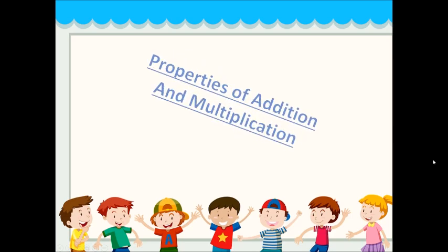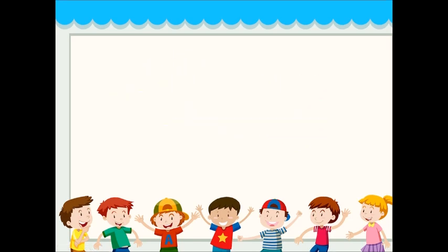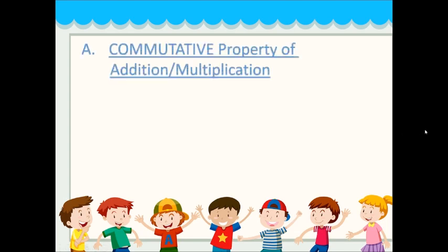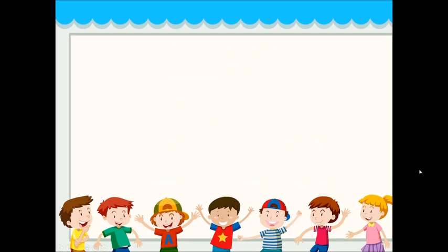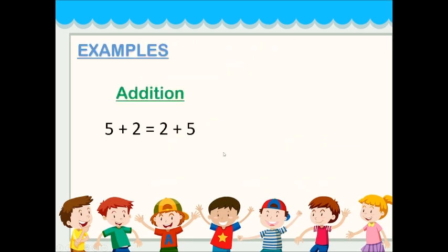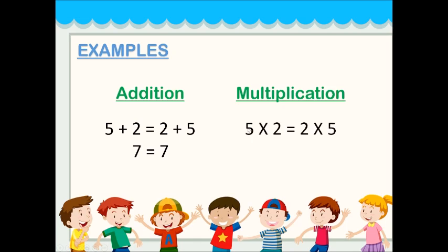Next is the properties of addition and multiplication. First is the commutative property. If A and B are any two whole numbers, then A plus B is equals to B plus A — changing the order of the addends does not affect the sum. Similarly, A times B is equals to B times A — changing the order of the factors does not change the product. Example: 5 plus 2 equals 2 plus 5, both equal 7. In multiplication, 5 times 2 equals 2 times 5, both equal 10.